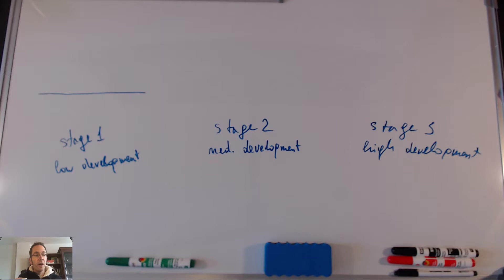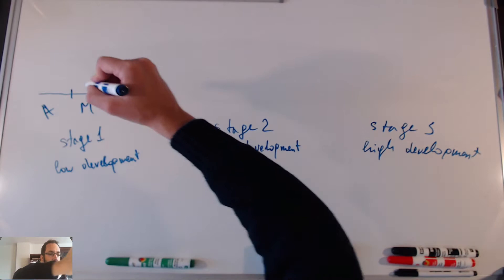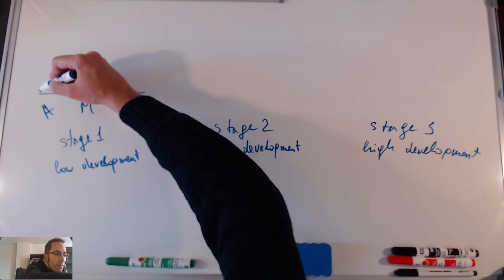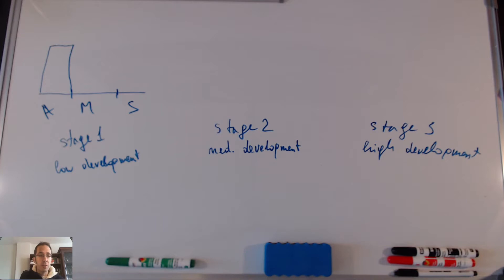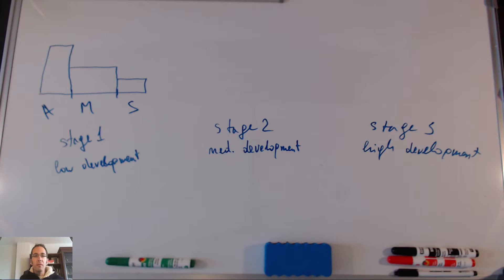I'm going to draw a column chart of the three different sectors: agriculture, manufacturing, and services. Economies with a low level of development are mainly agricultural-based, so we have a large agricultural sector, a small manufacturing sector, and an even smaller service sector. Again, this may not always be the case, but it would be a general trend.